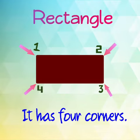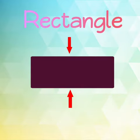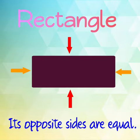It has four corners and also its opposite sides are equal — this side is equal to this. These four opposite sides are equal.